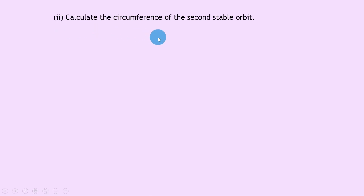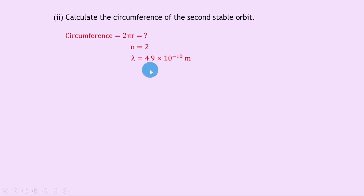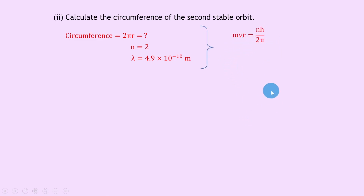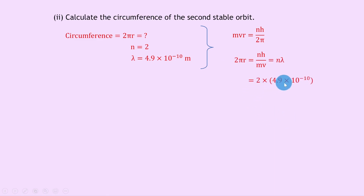Part two says to calculate the circumference of the second stable orbit. We're trying to find 2 pi r. n equals 2 because it's the second stable orbit, and the de Broglie wavelength is 4.9 times 10 to the minus 10 meters. Using 2 pi r equals n lambda, we substitute to get 2 pi r equals 2 times 4.9 times 10 to the minus 10, giving an answer of 9.8 times 10 to the minus 10 meters.